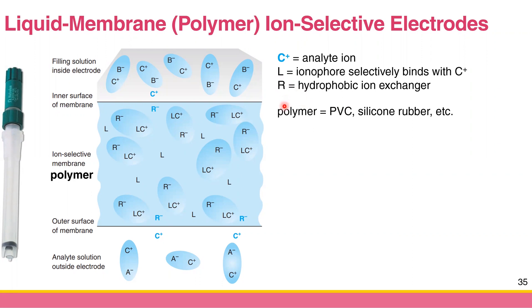What is the actual role of R? The cation C⁺, which is the analyte ion, carries charge. If you have a lot of C⁺ binding inside the membrane, you generate a large charge imbalance, and if the charge is imbalanced, the binding between C⁺ and L won't happen. So you need R, the ion exchanger, to balance the charge — similar to how a salt bridge balances charge in a galvanic cell.